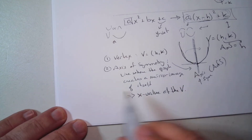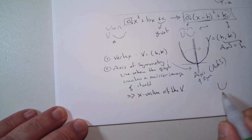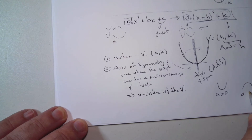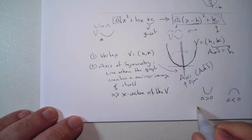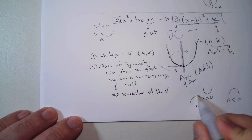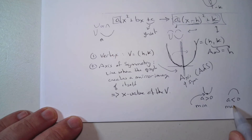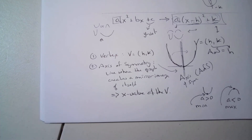Also from the vertex form, we know if it opens up or down. If a is positive, it opens up. If a is negative, it opens down. If it opens up, we have a minimum — the vertex is at the lowest point. If it opens down, we have a maximum.